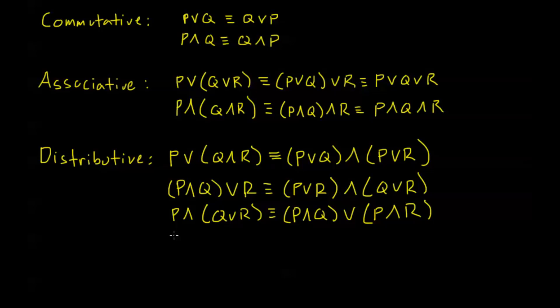And then finally I have, if I have P or Q and R, that's going to be equivalent to P and R or Q and R. So these are our distributive laws.